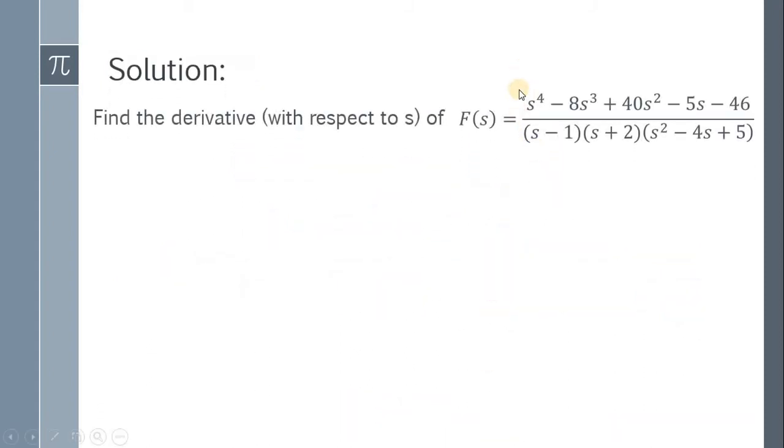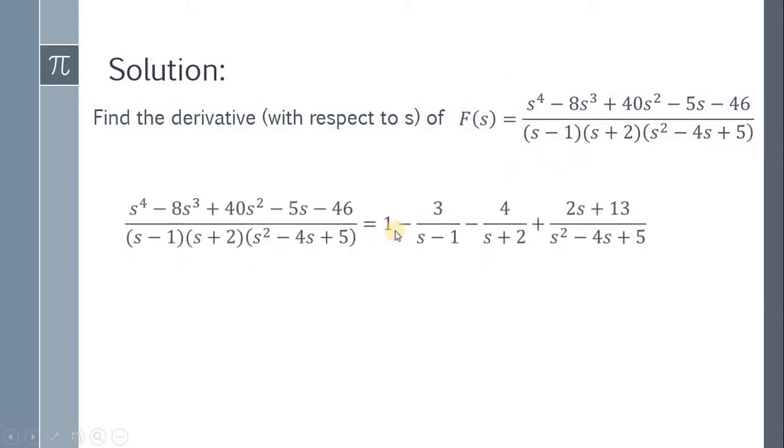On part 1, we get the partial fraction decomposition of our expression and this equals 1 - 3/(s - 1) - 4/(s + 2) + (2s + 13)/(s^2 - 4s + 5). Therefore, we have F(s) = 1 - 3/(s - 1) - 4/(s + 2) + (2s + 13)/(s^2 - 4s + 5).